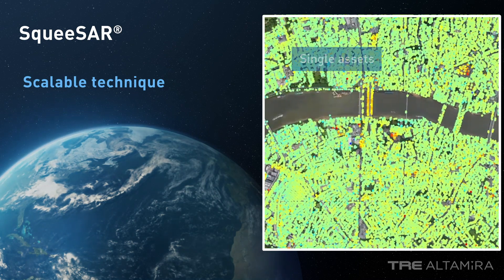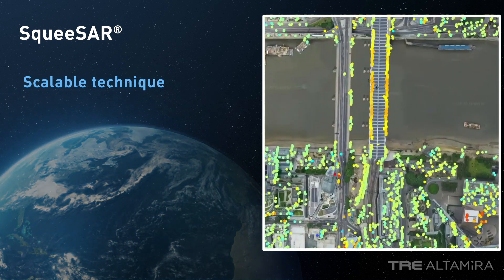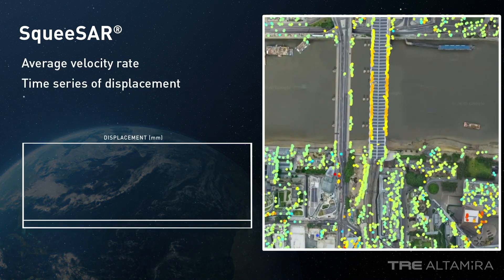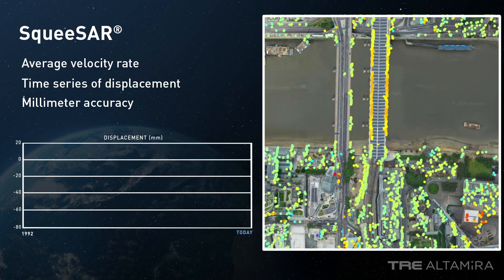SQUISAR provides a database of measurement points. Each point has an associated average velocity rate and time range of displacement over the study period.